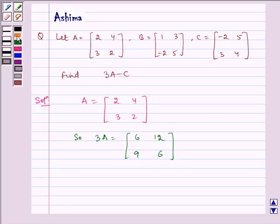And given to us, C equals minus 2, 5, 3, 4.